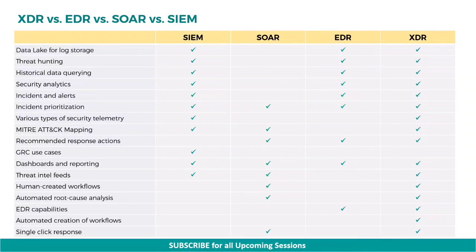The ability to use various types of security telemetry can be done in both SIEM and XDR only. Mapping to the MITRE ATT&CK matrix can be done in SIEM, SOAR, and XDR.